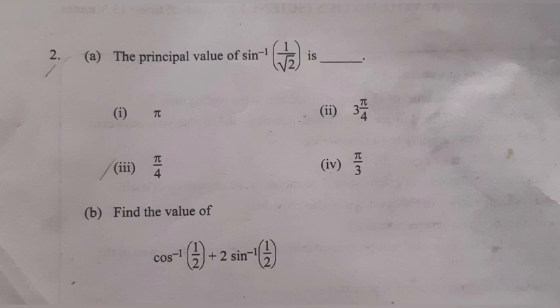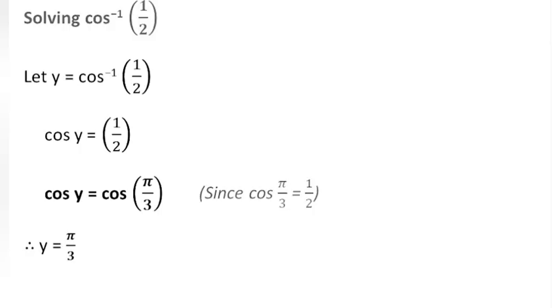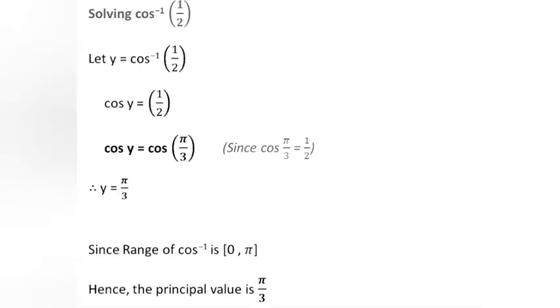Find the value of cos⁻¹(1/2) + 2sin⁻¹(1/2). Solving cos⁻¹(1/2): let y = cos⁻¹(1/2), so cos y = 1/2 = cos(π/3). Since the range of cos⁻¹ is [0, π], the principal value is π/3.